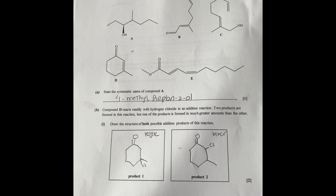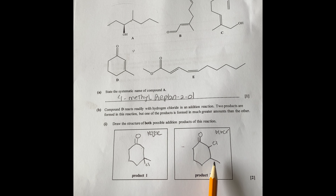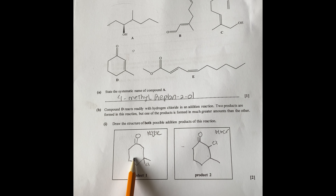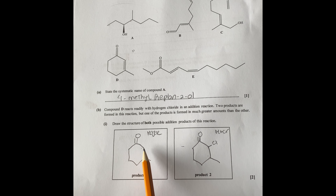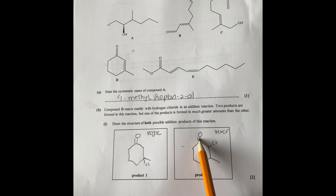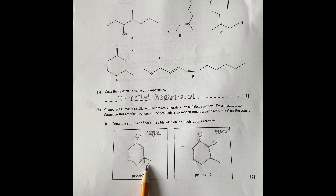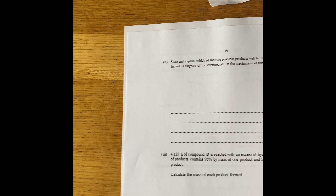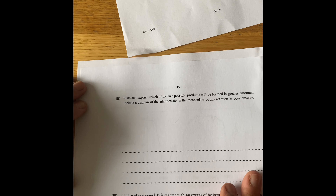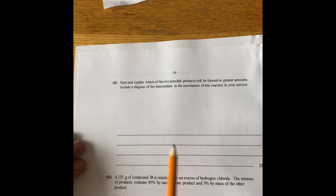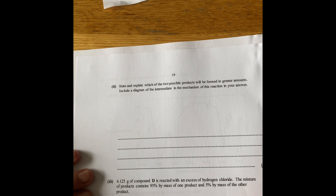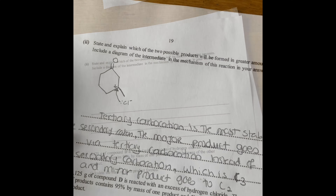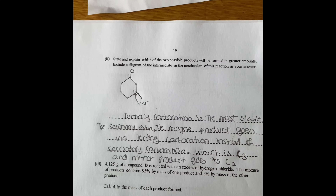The reason for that is this forms a tertiary carbocation. The tertiary carbocation is more stable than a secondary carbocation, and therefore it goes via the tertiary carbocation. In this case, carbon number three is more favorable than carbon number two. That explains which of the two possible products will be formed in greater amounts.